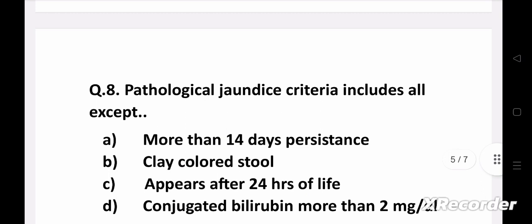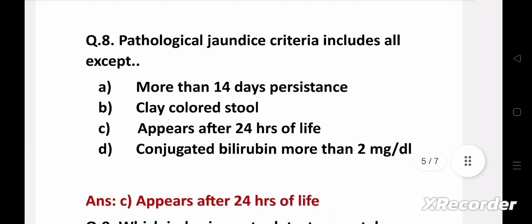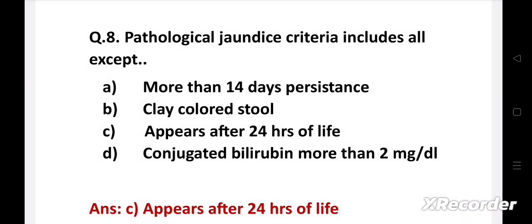Pathological jaundice criteria includes all except option A more than 14 days persistence, B clay colored stool, C appears after 24 hours of life, D conjugated bilirubin more than 2 mg per dL. Right answer is option C, appears after 24 hours of life. If jaundice appears after 24 hours of life, then it is called physiological jaundice, not pathological jaundice. All others are the criteria of pathological jaundice.